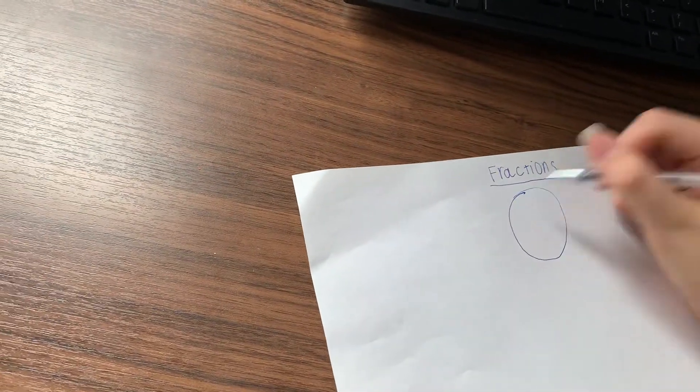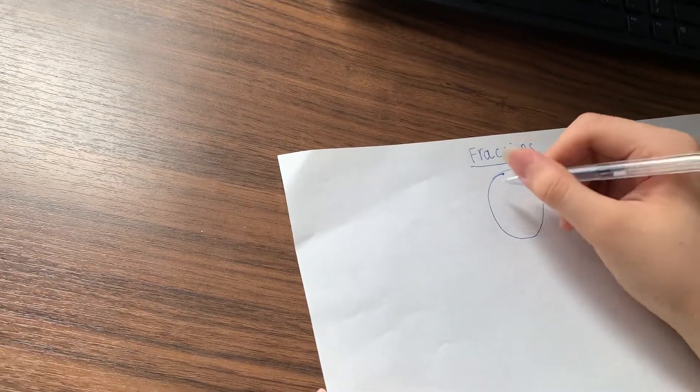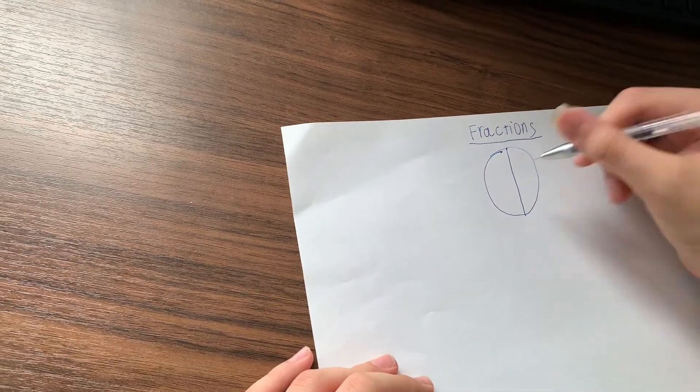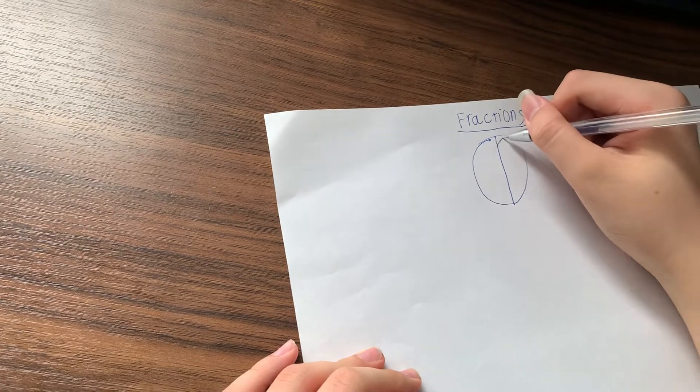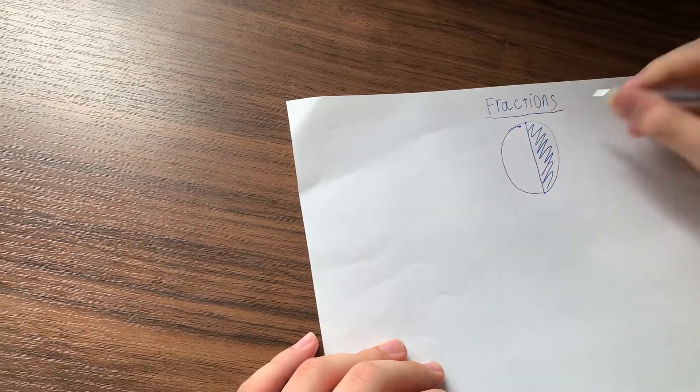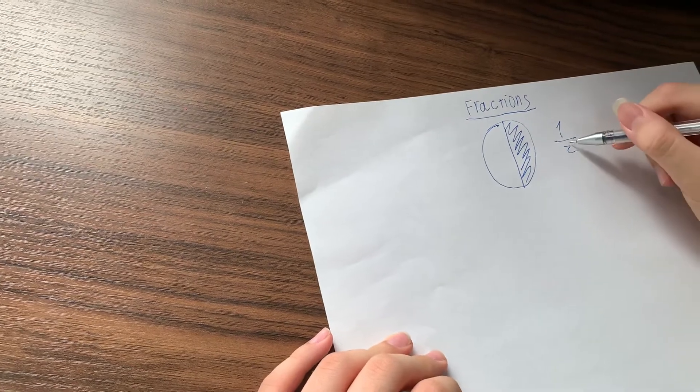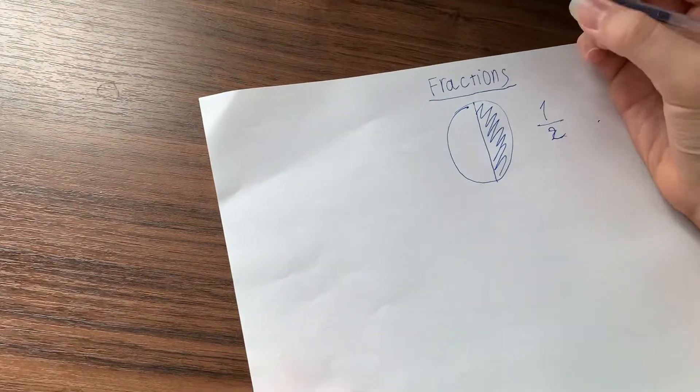So for example you have a pie. Then you divide it into two parts equally. This part is one half. This is the most simple fraction in the entire fraction game.